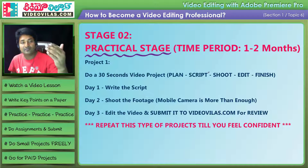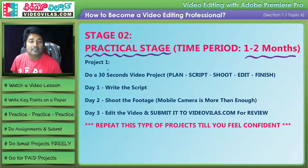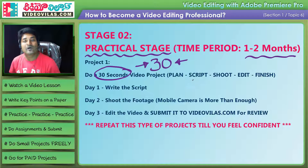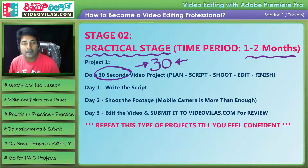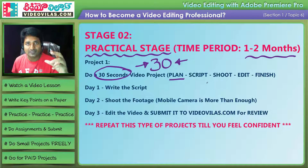In the practical stage, you do assignments and practice in the real world in real time — around 2 to 3 months. Start with 30-second projects. Write a simple script of 1 or 2 pages, shoot the footage, and edit it. This is how you add a real film-making process to your practice.